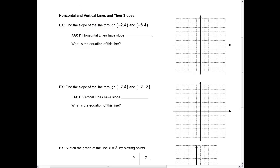Hi, everybody. In this lesson, I want to talk about horizontal and vertical lines and their slopes. So, first I'd like to find the slope of the line that goes through the point negative 2, 4, and negative 6, 4.